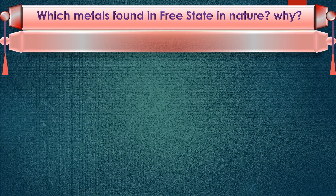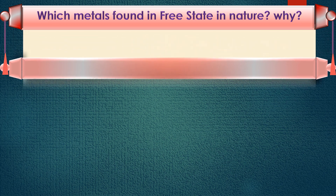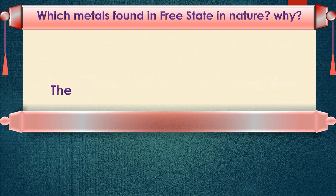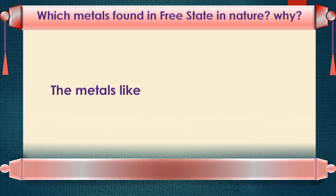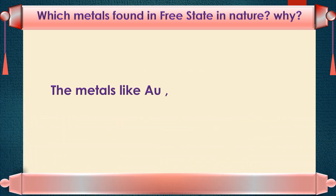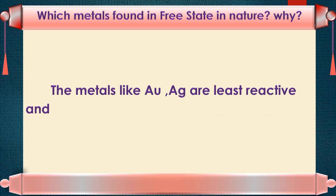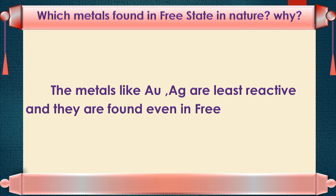Which metals are found in free state in nature, and why? The metals like Au (Gold) and Ag (Silver) are least reactive and they are found even in free state in nature.